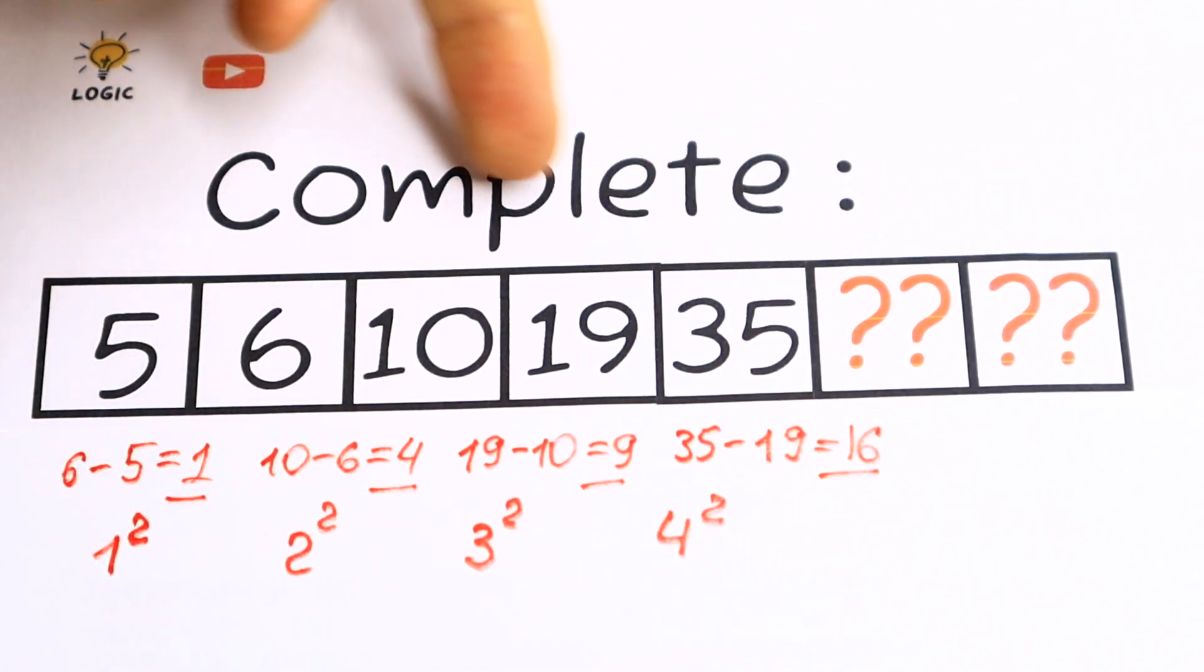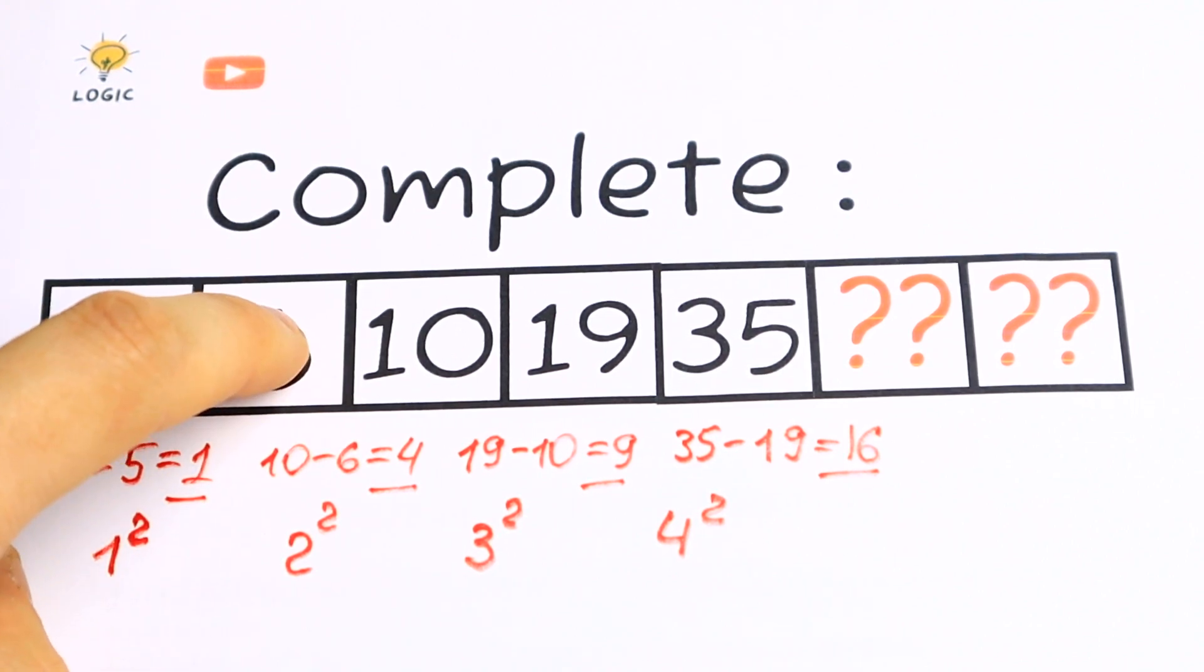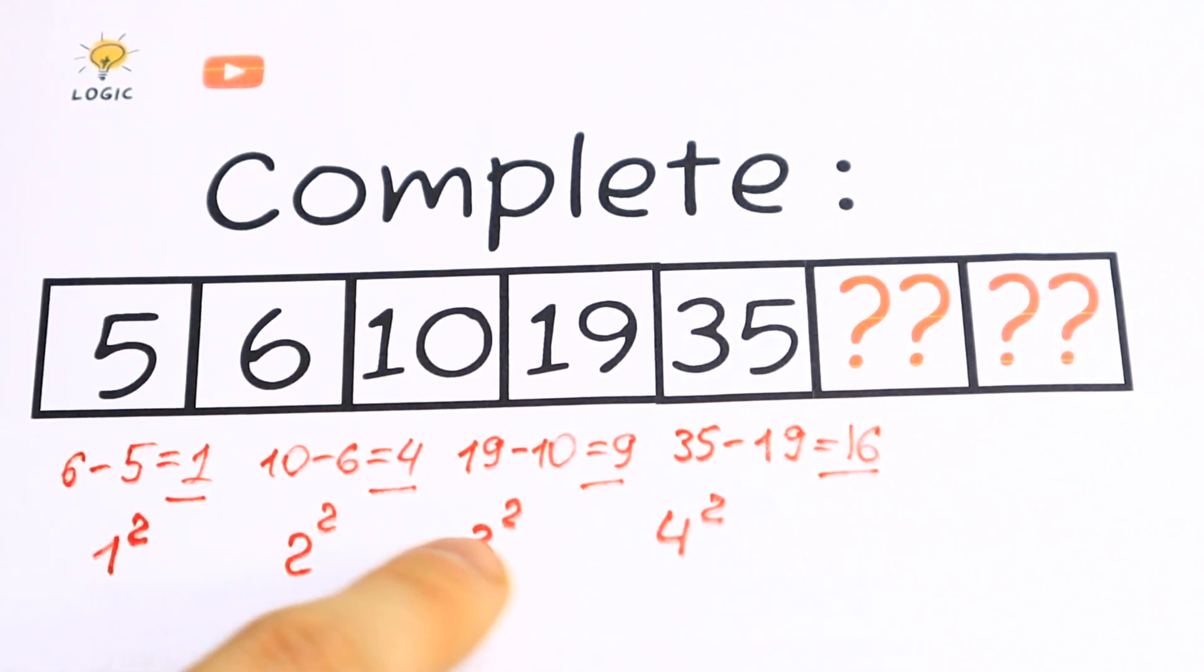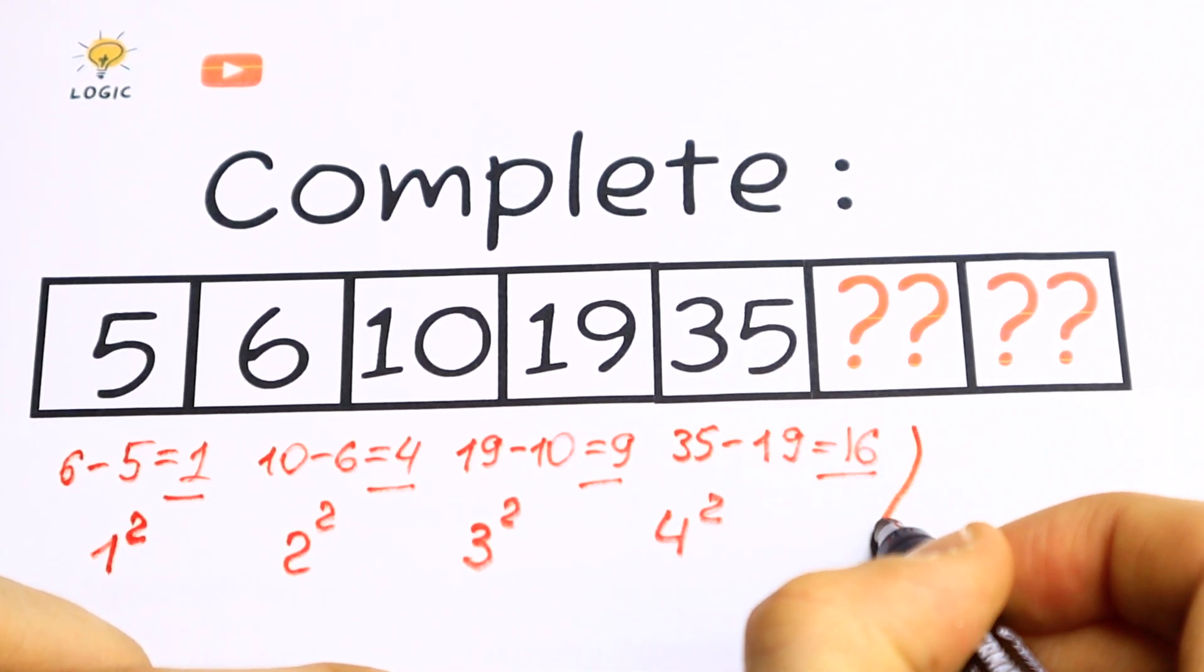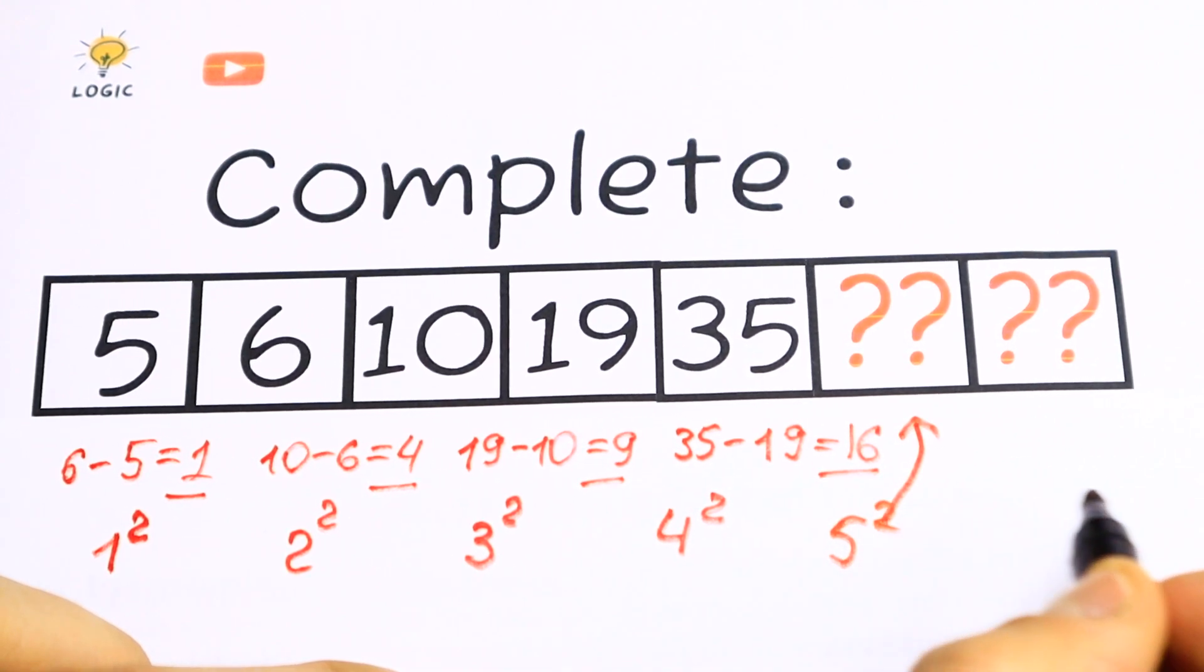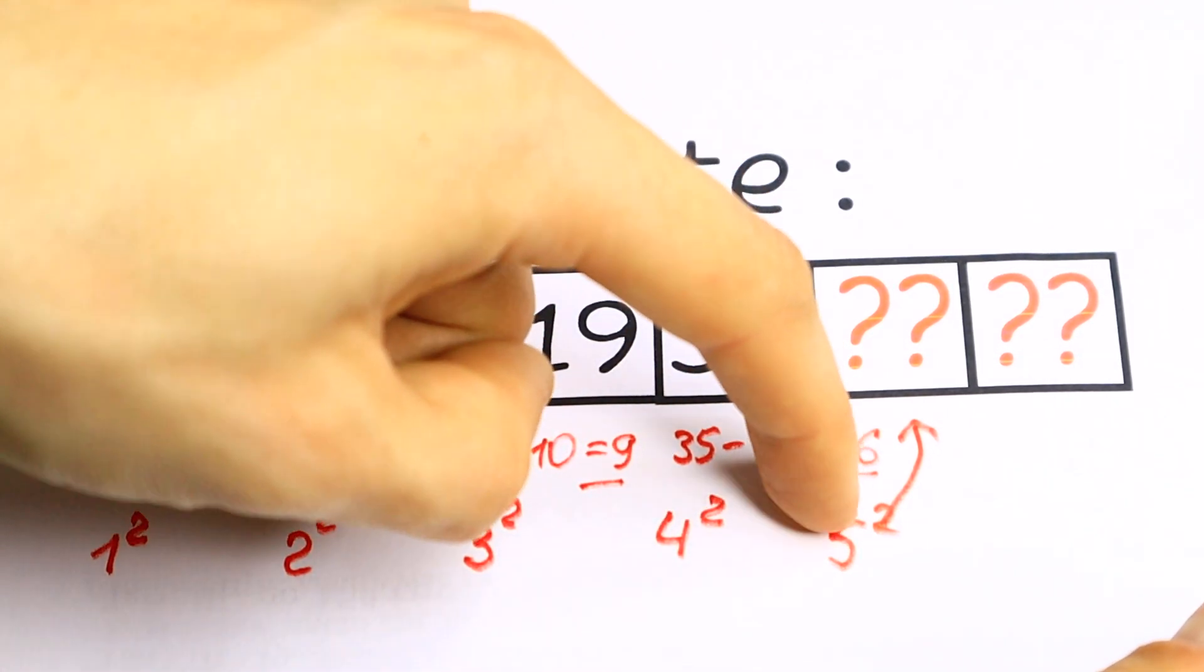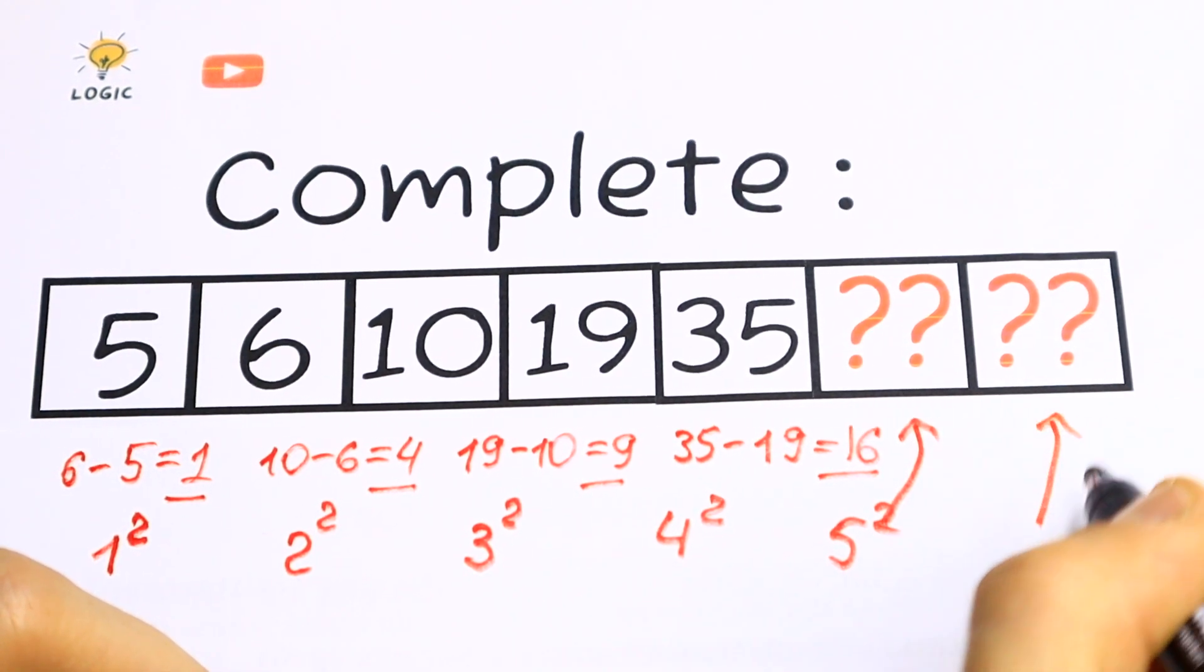So the pattern between all these numbers in the beginning, we have squares. If we subtract the next one by the previous one, we have squares. So it's not hard to see that the pattern in this number is 5 square. So we need to find the number. We need to find right here we will have 5 square. And right here we need to have 6 square.